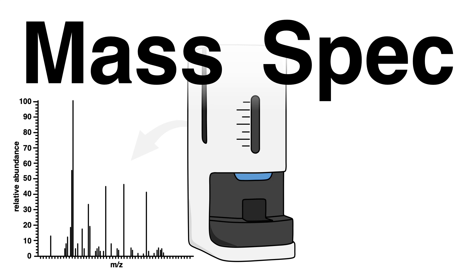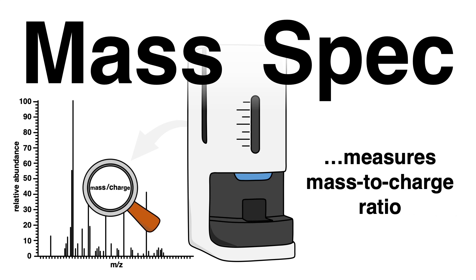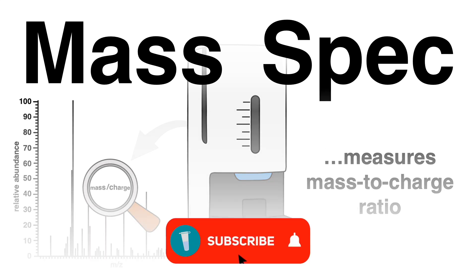Mass spectrometry, also known as mass spec, is an analytical technique that measures mass-to-charge ratio. In this video, you will learn how this method works and why it is such a powerful tool in research. Before we jump right into it, I would kindly ask you to subscribe to the channel to stay updated. It is free of charge but supports me a lot.